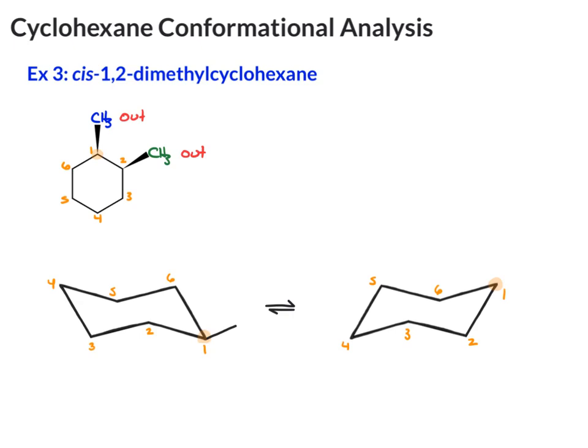On carbon-2, the up group is the axial. The down is the equatorial. Again, I'm going to leave that one off.